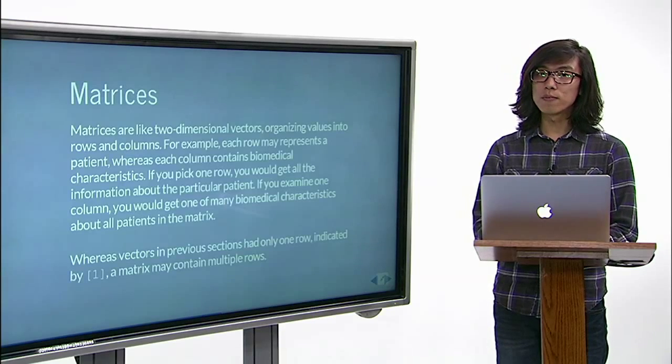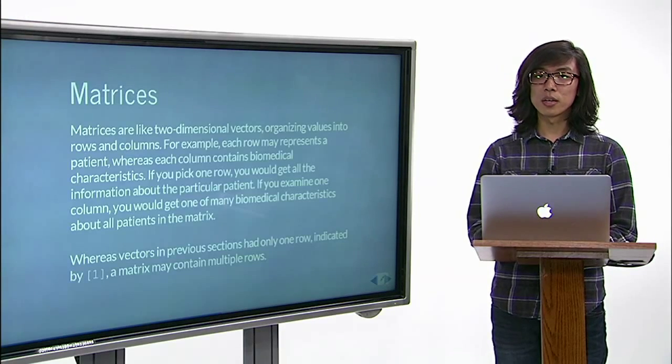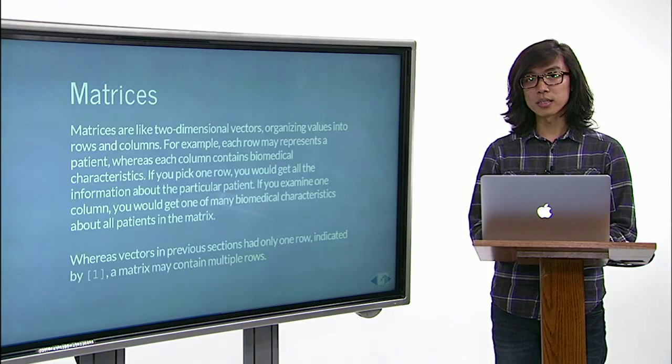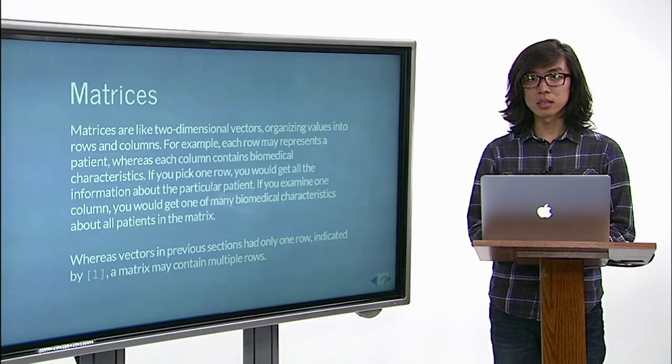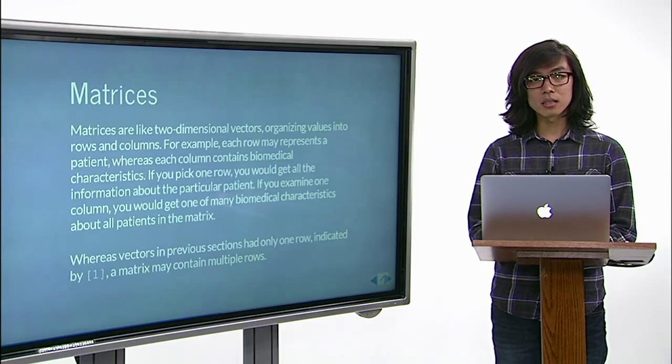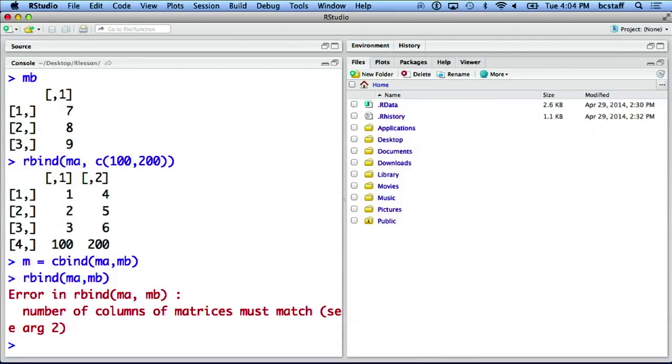To extract one value or a subset of values from a matrix, use square brackets with both row and column indexes, such as index of row, comma, index of column. If we would like to know the element in the first row and the third column, here is my command.